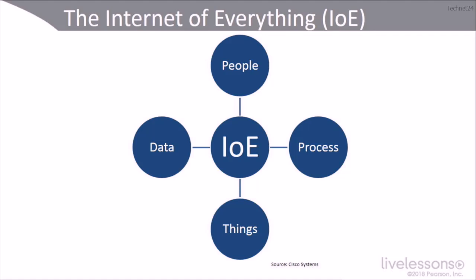Then there's Things — these are the physical devices and the virtual devices that have commoditized components with IPv4 and IPv6 addresses on the internet and each other, the IoT. And then of course Data — changing data into information, and from information into wisdom, to make intelligent choices and decisions about everything connected to the internet.